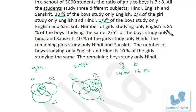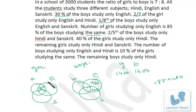Number of girls studying only English is 85% of the boys studying the same. Only English for boys is 480, so 0.85 of 480 equals 408 — that's girls studying only English. Then 2/5 of the boys study only Hindi and Sanskrit. 2/5 means 40%, and 40% of 1600 is 640. They study only Hindi and Sanskrit, so that figure is 640.